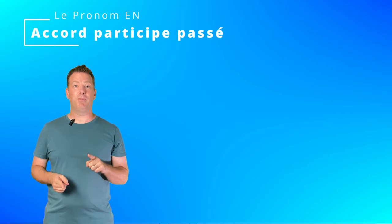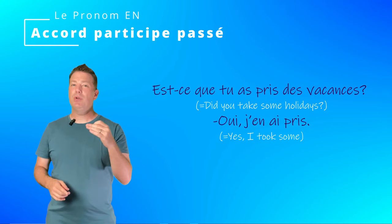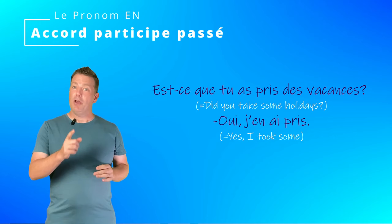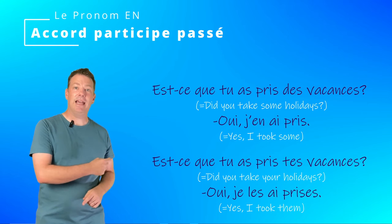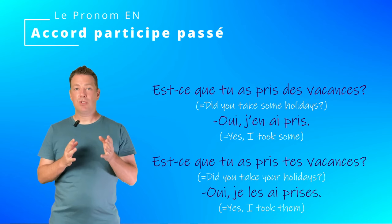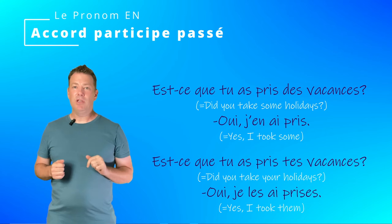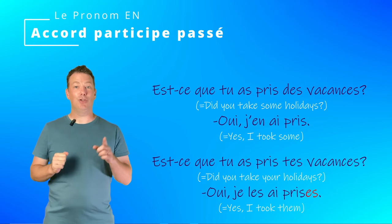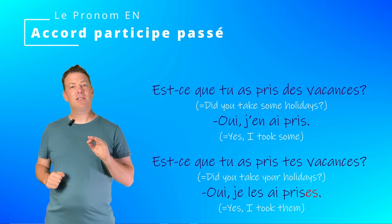Est-ce que tu as pris des vacances? Oui, j'en ai pris. Here the COD is VACANCES, introduced by DES, so we use EN — no past participle agreement. But be careful: if we say Est-ce que tu as pris TES vacances, the COD is not introduced by DE, so we do not use EN. Instead, we use the COD pronoun: Oui, je les ai prises — with agreement in ES because VACANCES is feminine and plural.